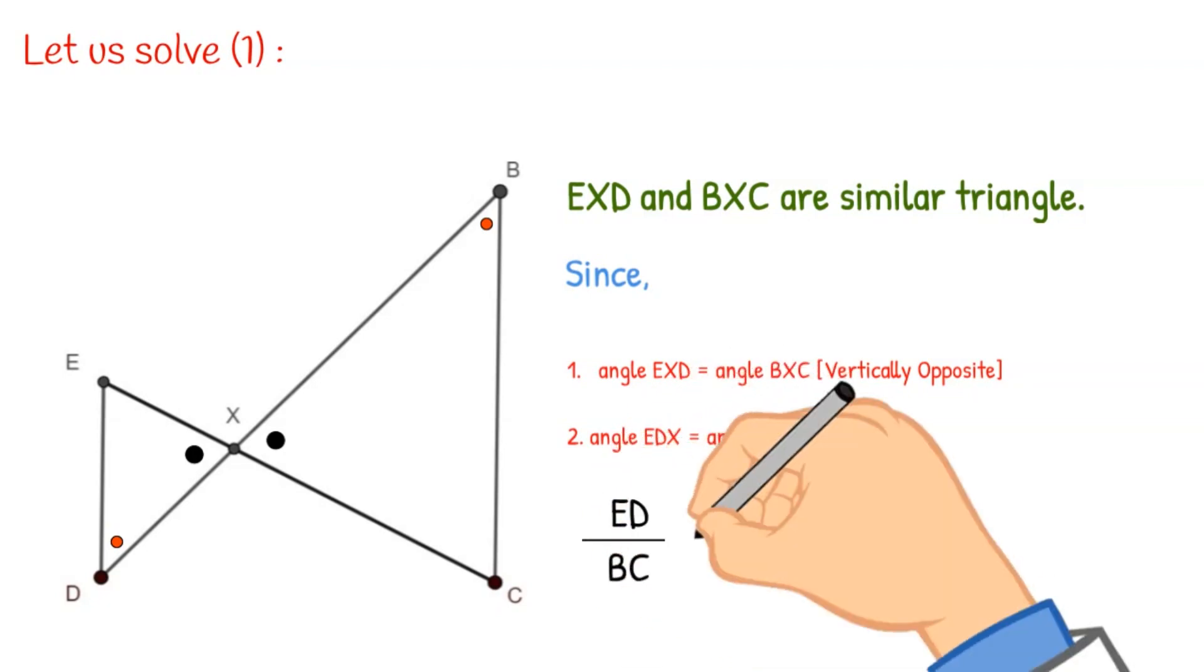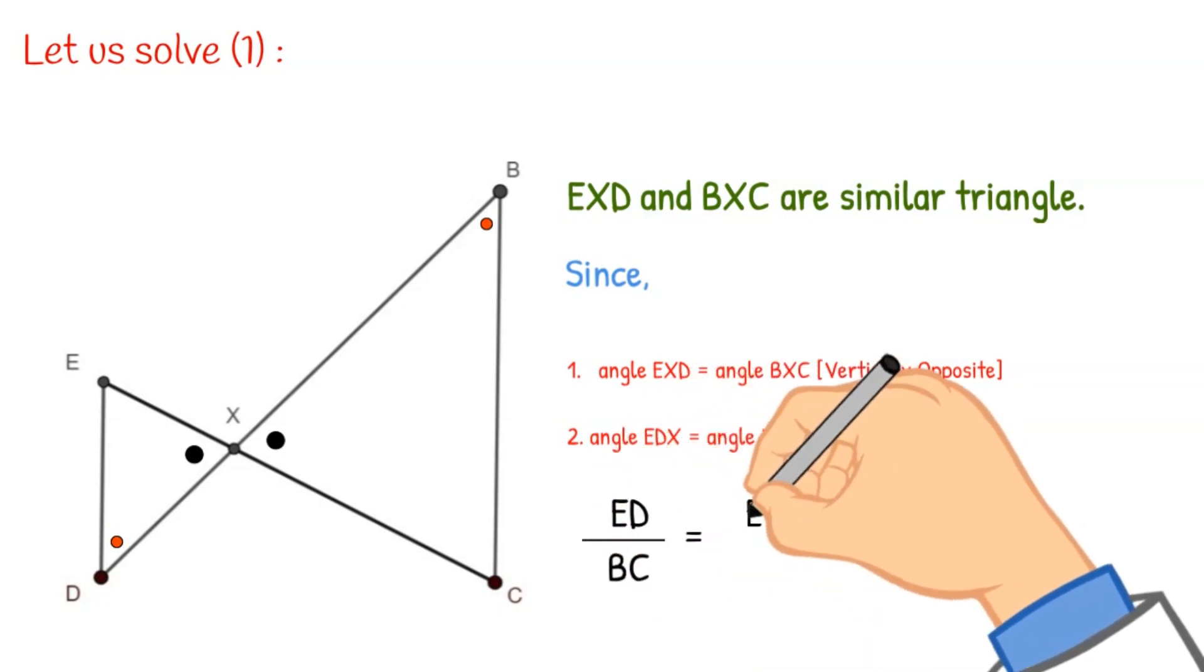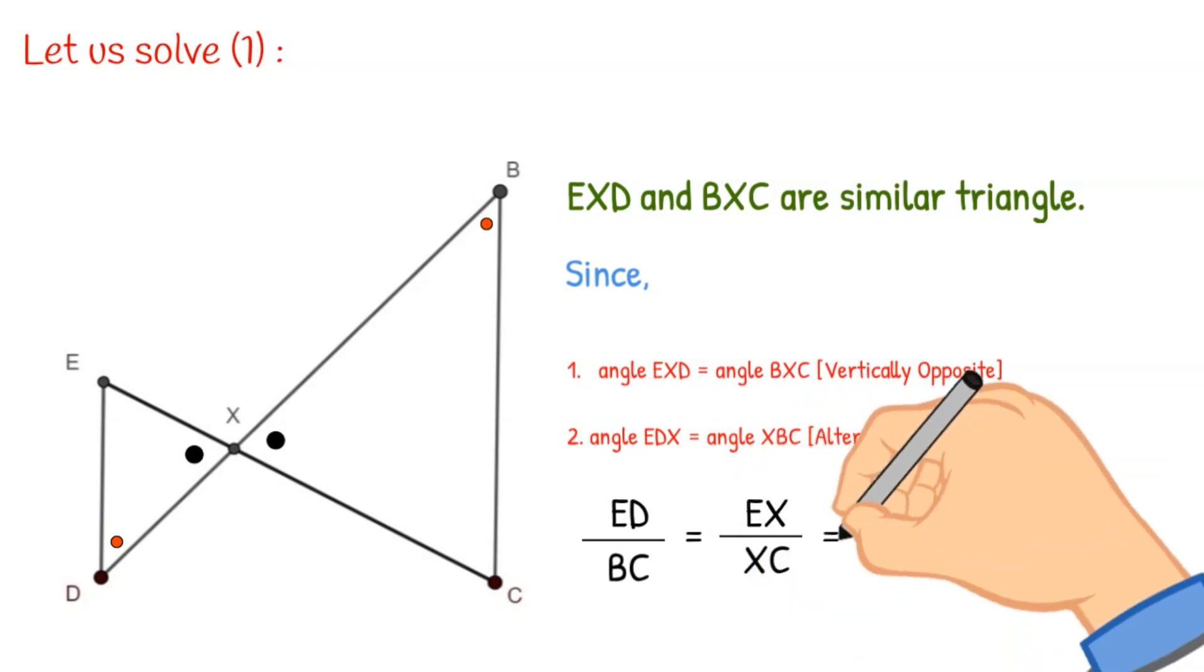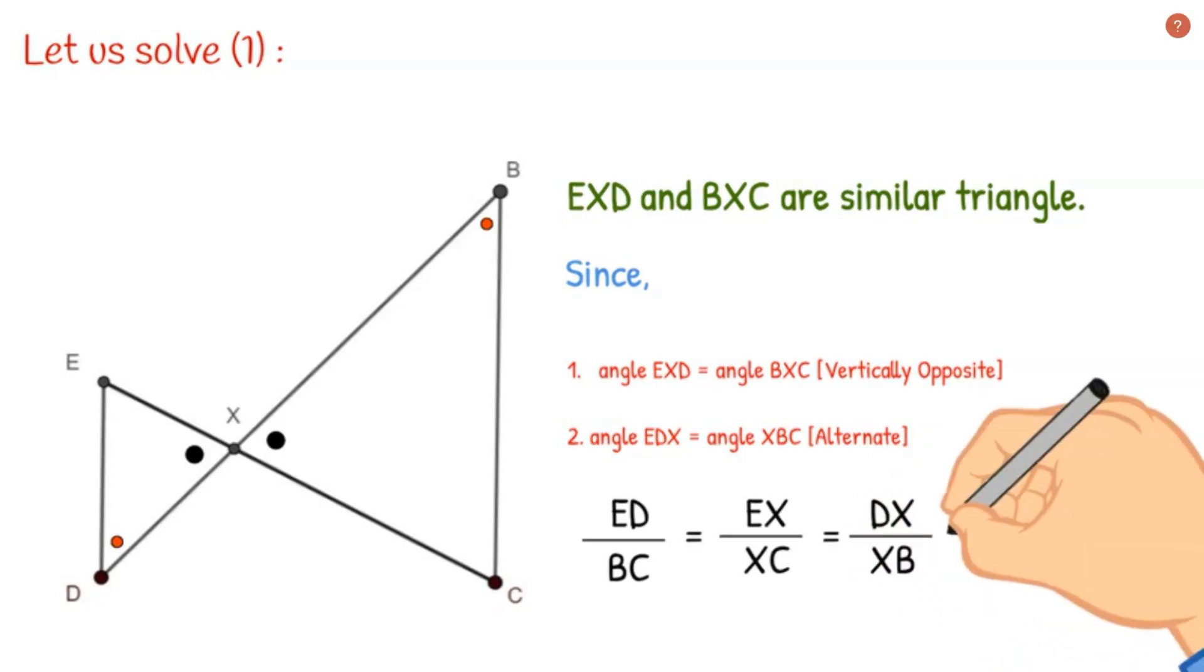Now as these two triangles are similar, then ratios of their respective sides will be same. We can easily see that E is the midpoint of the side AD.